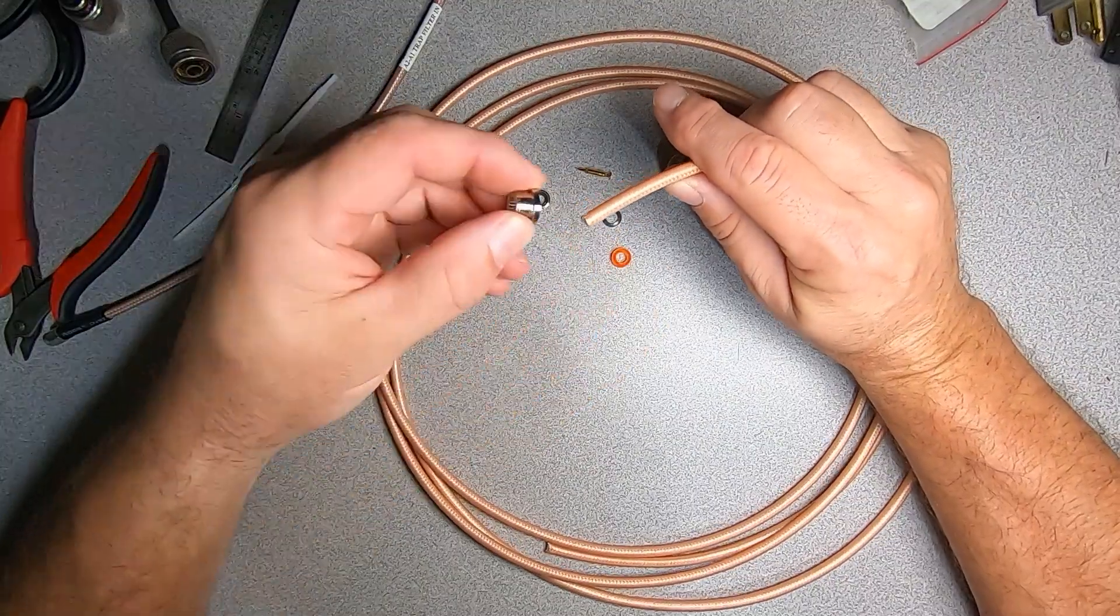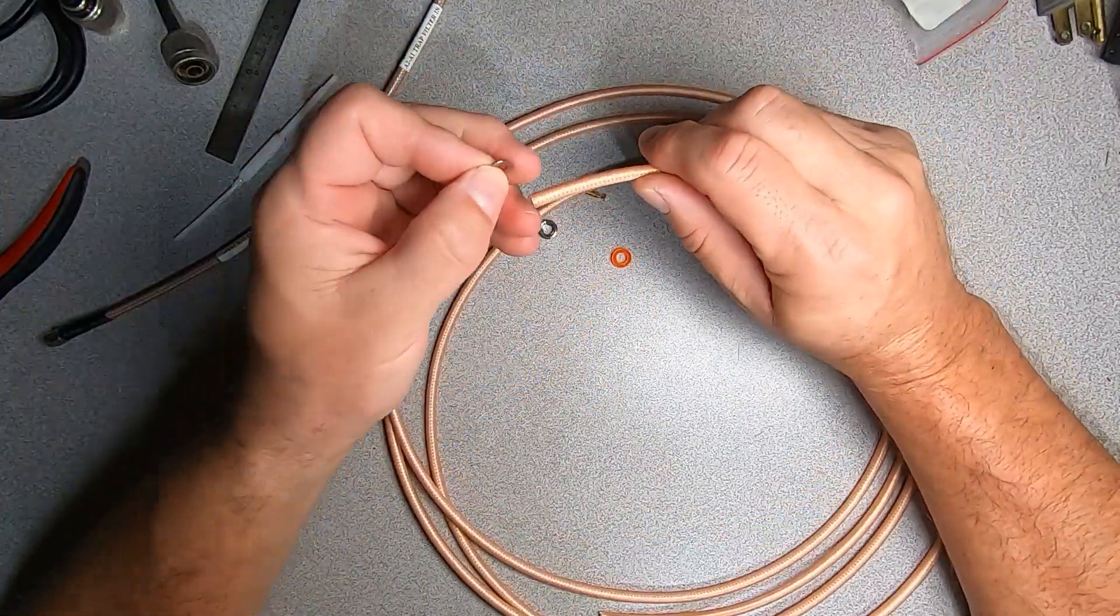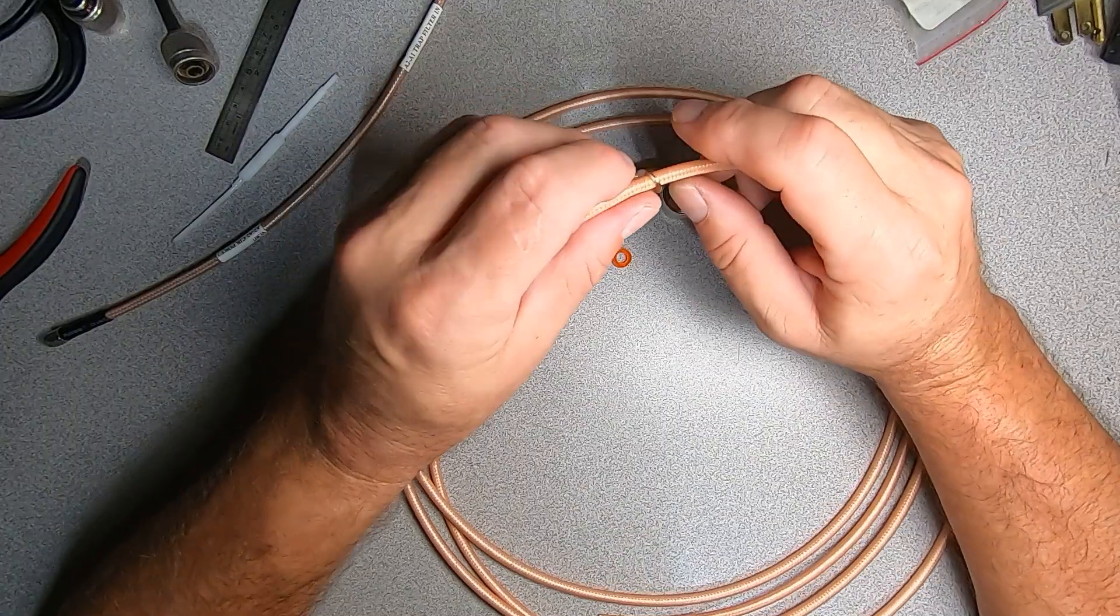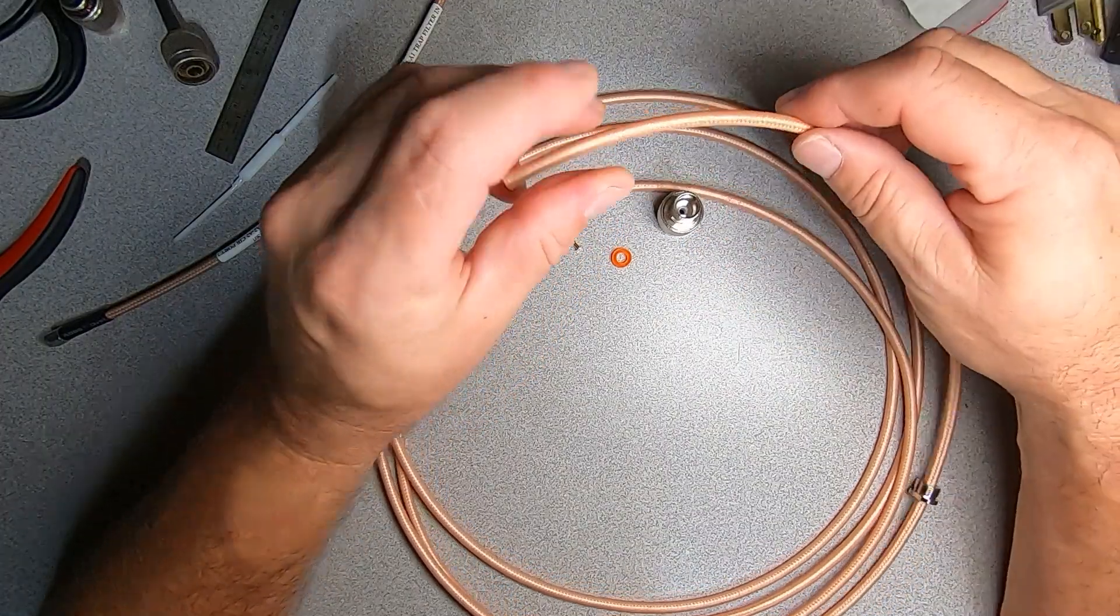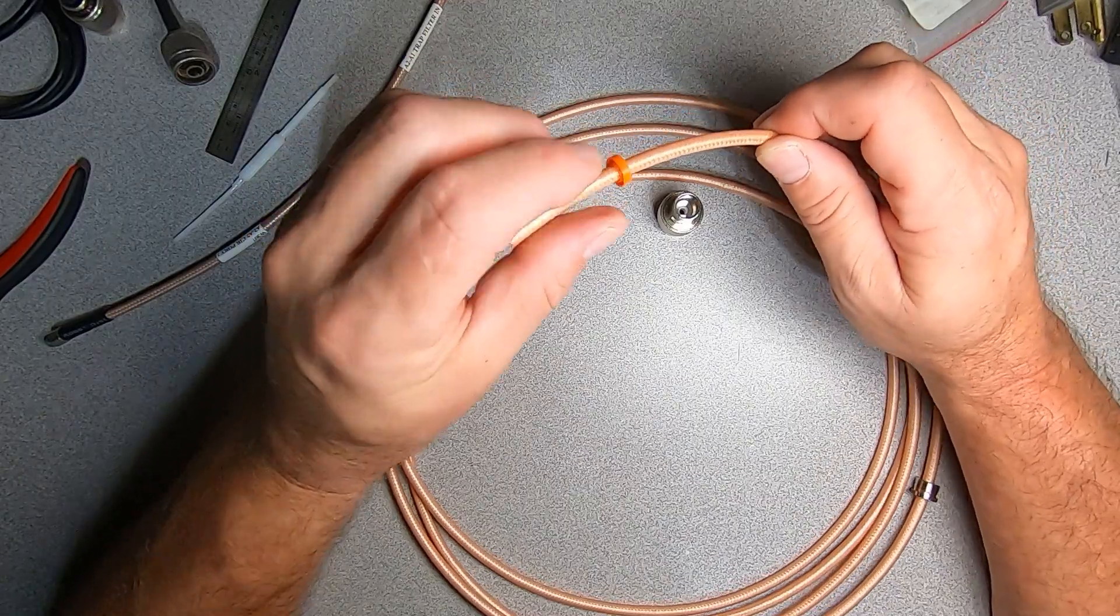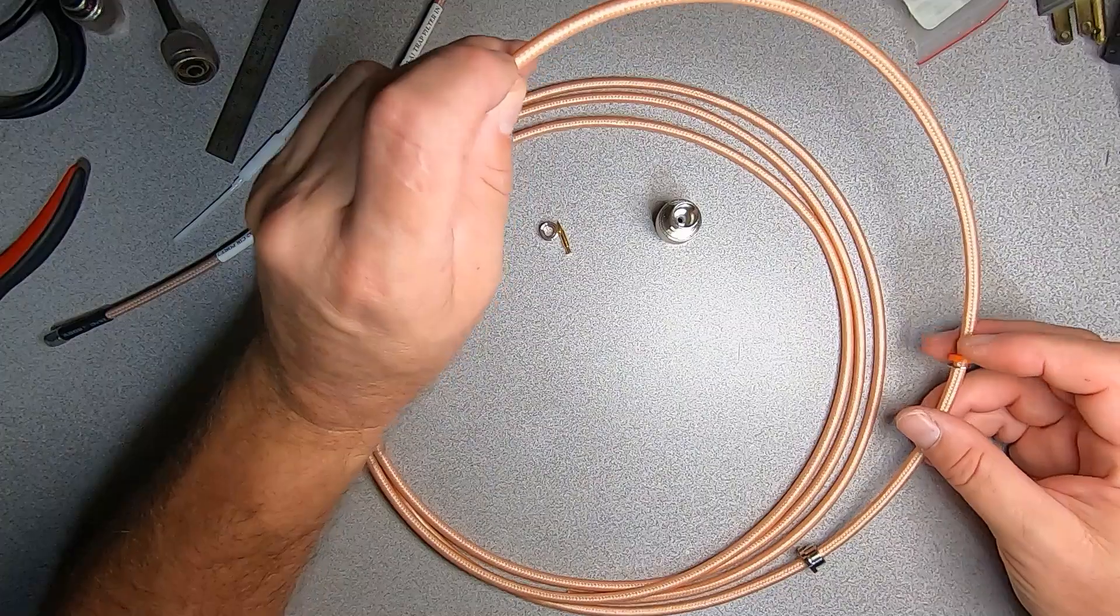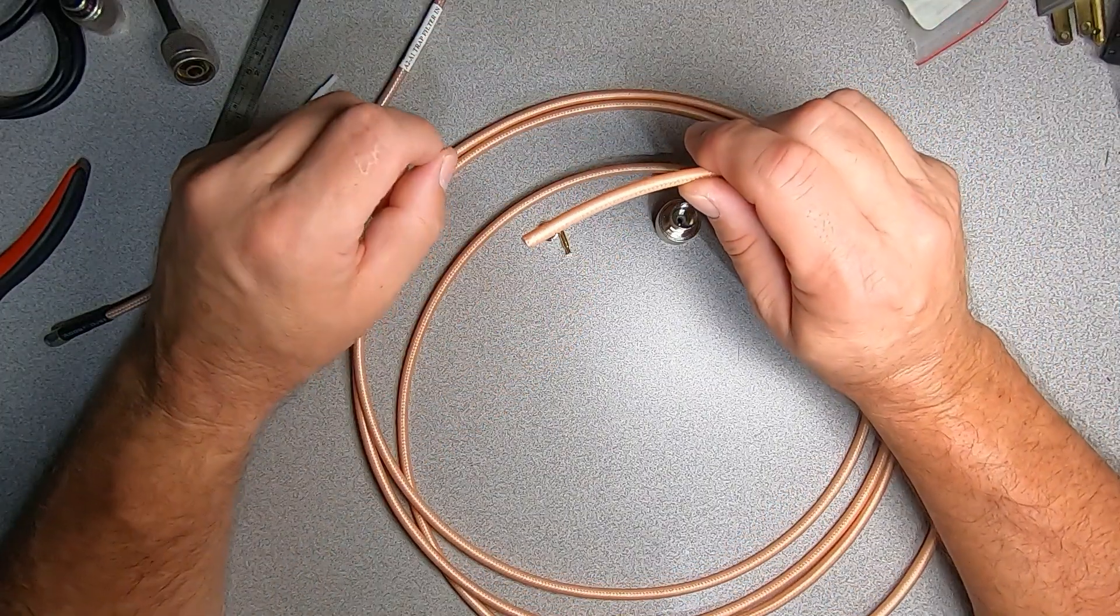Take your clamp nut, put it on first, followed by your clamp washer, then your clamp gasket, and now we're ready to strip our cable.